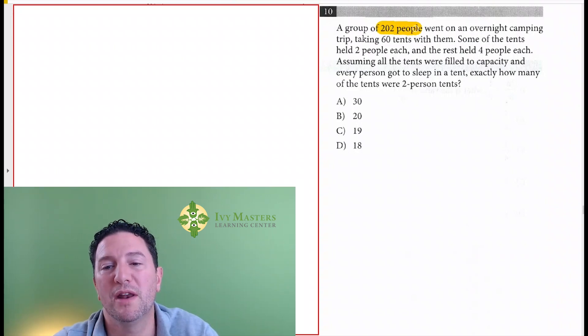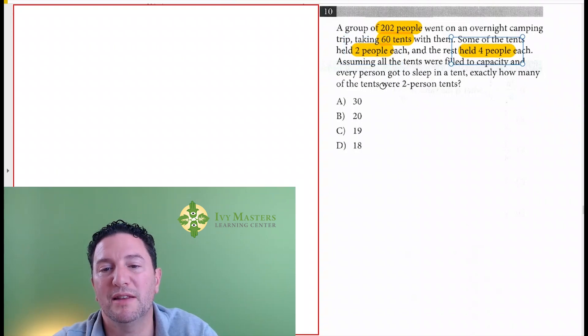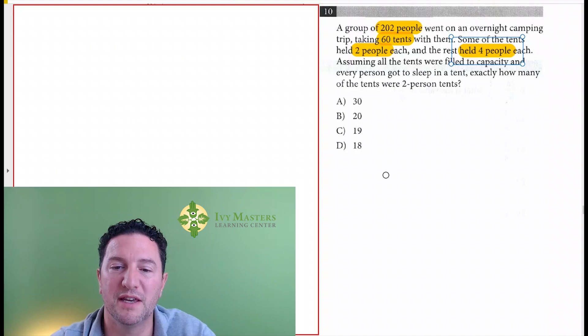A group of 202 people went on an overnight camping trip, taking 60 tents with them. Some of the tents held two people, and the rest held four people. Assuming that the tents were filled to capacity and every person got to sleep in a tent, exactly how many of the tents were two-person tents?